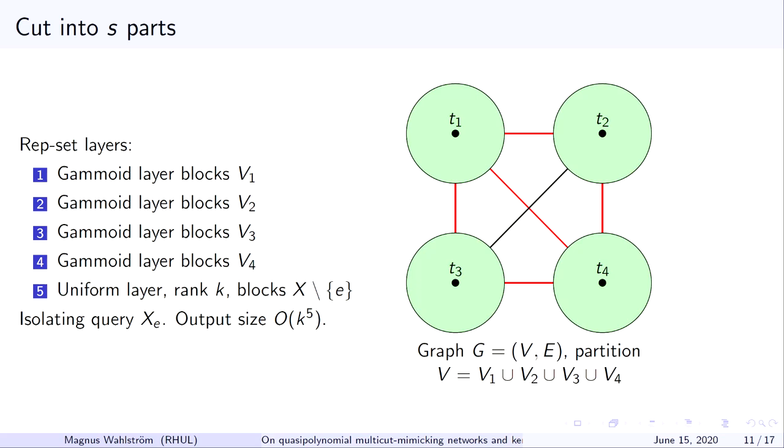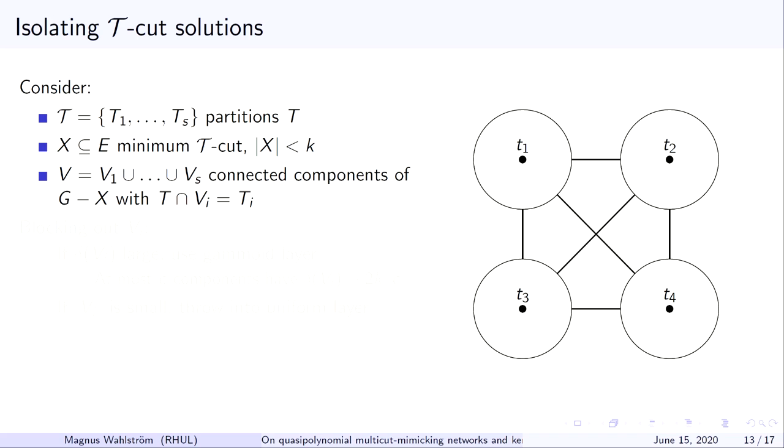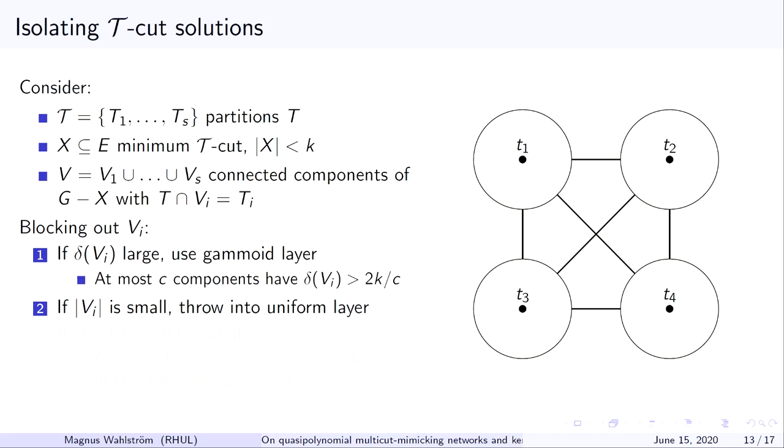So how do we adapt this to work with more than constant number of partitions? So imagine that this were a picture with an unbounded number of different parts. We have some cut X, which implements this partition. And the connected components will, as before, be called V_i. V_i being the connected component contains the terminal set T_i.